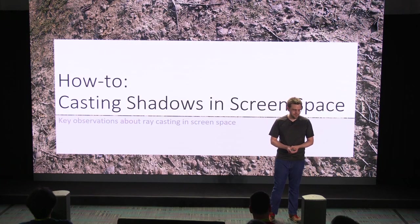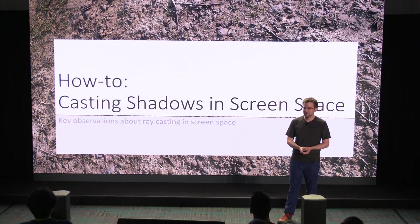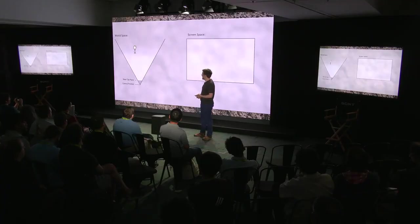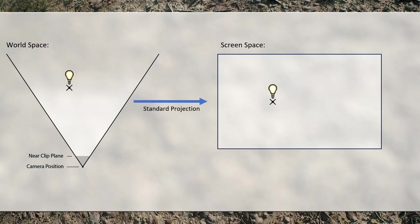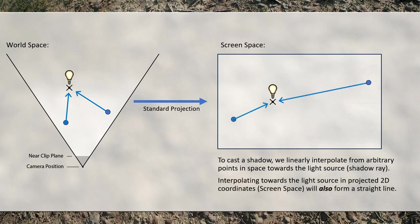Before we do that, I need to cover a few things first — specifically, how you actually do ray tracing in screen space, going back to coordinate systems 101. There are three key observations. First, light travels in a straight line — not only in world space, but due to the projection we're using, they also travel in a straight line in screen space. That makes things way easier: if we want to trace our screen ray, we just iterate towards the projected coordinate of the light.